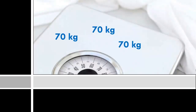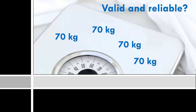For the scale to be both valid and reliable, not only does it need to tell you the same weight every time you step on it, but it also has to measure your actual weight. Switching back to testing, the situation is similar. A test can be reliable — meaning that test takers will get the same score no matter when or where they take it, within reason — but that doesn't mean it is valid or measuring what it is supposed to measure.